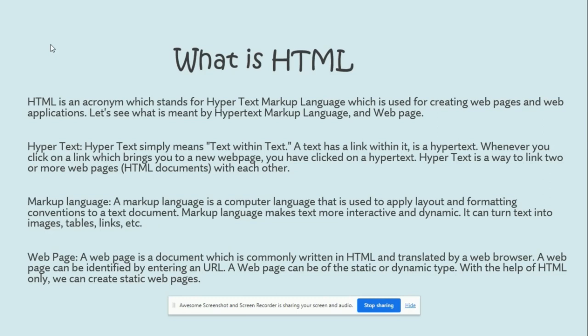It can turn text into images, tables, and links, etc. Now we will discuss about what is a webpage. A webpage is a document which is commonly written in HTML and translated by a web browser. A webpage can be identified by its URL. It can be of static and dynamic type.